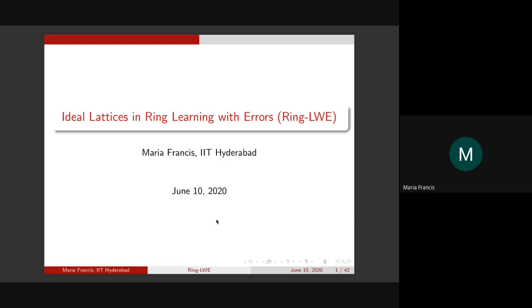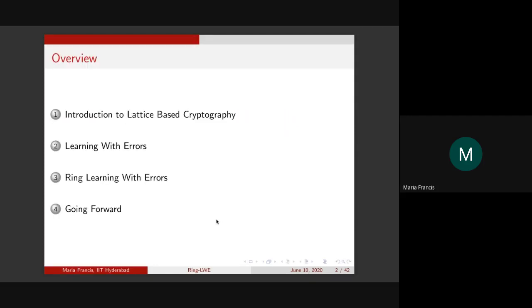I hope I'm audible and the slides are clear. Just let me know if at any point you have questions. The focus of today's talk is to look at how ideal lattices can be used in the ring learning with errors problem. That is something we cover towards the end. For the first half, the focus would be to give an overview of lattice-based cryptography and the learning with errors problem. The idea is to help graduate students enter this area, as it has a mix of algebraic number theory, theoretical computer science, and practical engineering. It's a young area with a lot of prominent researchers.